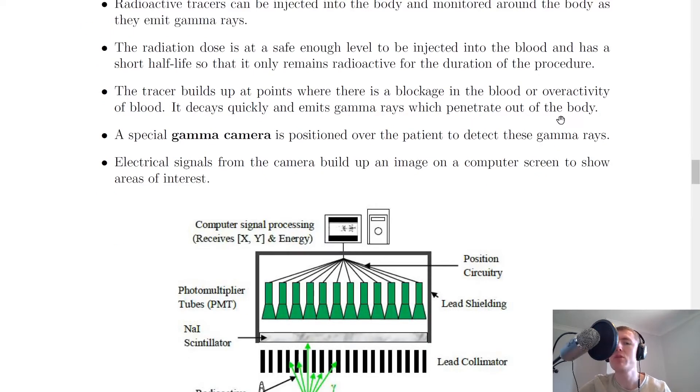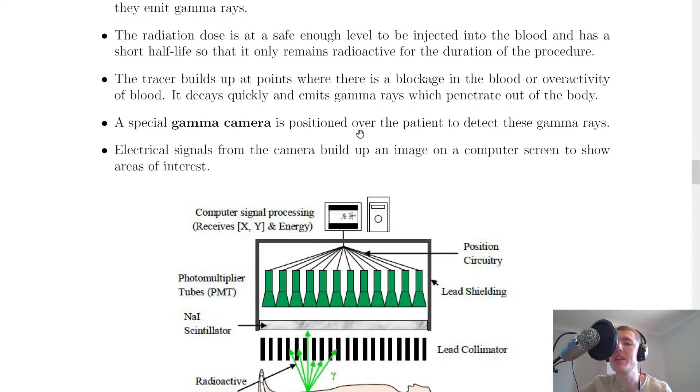As the tracer travels around your body, it builds up at points where there is a blockage in the blood or overactivity of blood. The reason there will be a build-up where there's overactivity is because cancerous cells and cancerous tumors tend to use up lots of energy and lots of the body's resources, as they're going to grow at a faster rate than normal healthy cells. The build-up of tracer decays quickly and emits gamma rays which penetrate out of the body.